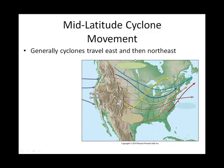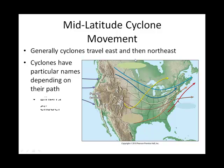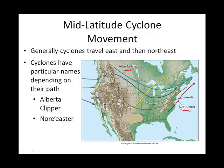These slides show the different paths that mid-latitude cyclones might take, and they have cool names depending on the path. For instance, the Alberta Clipper is a mid-latitude cyclone that takes a path through the northern region. Nor'easters are systems that track along the eastern coast. The Panhandle Hook systems start in Texas — that's where the name comes from — as shown by the little arrow indicating the hook of Texas.